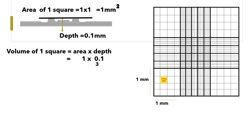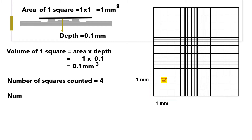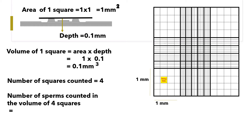This is the volume in which you have counted the number of sperms. We are counting sperms in four squares. One square has a volume of 0.1 mm³, so four squares will have 4 × 0.1 = 0.4 mm³.